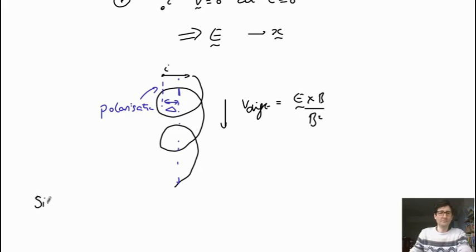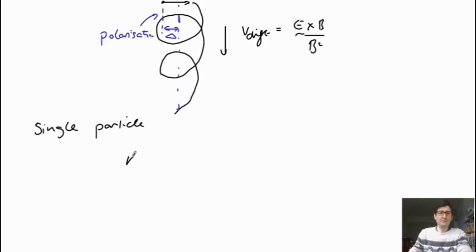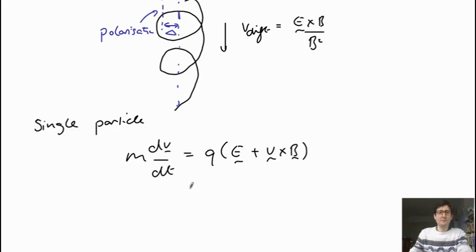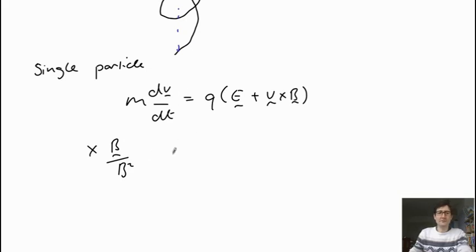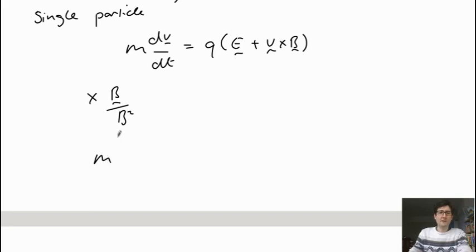If we start with the single particle momentum — the equation of motion for a single particle — we just have the mass of the particle, and the change of momentum is just the force, which is q times (E plus v cross B). So that's the Lorentz force on the particle. If we now take a cross product of this with the magnetic field vector over B squared — a cross product with B vector over B squared — on the right side, we end up with m over qB² times dv/dt crossed with B.